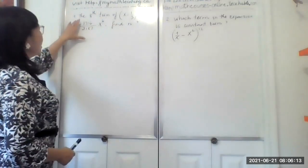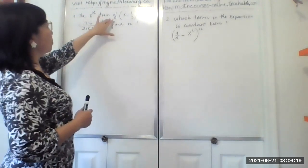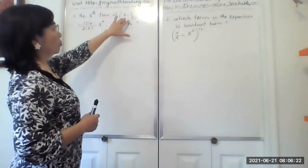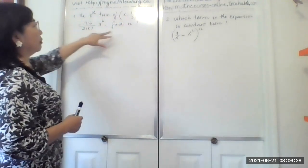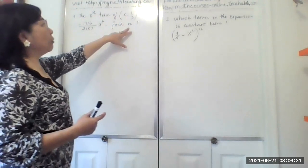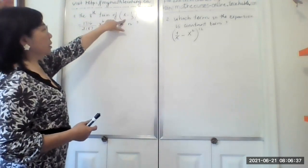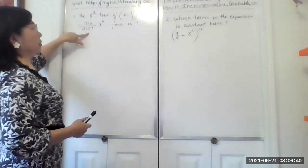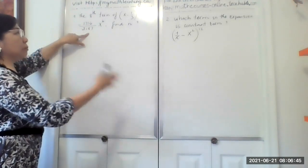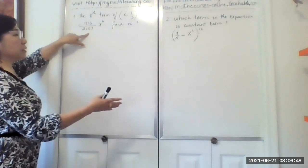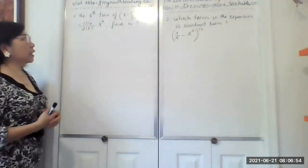The question says the eighth term is given, but we don't know what power of n is. Our task is find the power n. When the eighth term of this binomial equals this, then what power is that? Is it power 14, power 12, power 5, power 6? We don't know. We want to find out. So how do we answer this question?